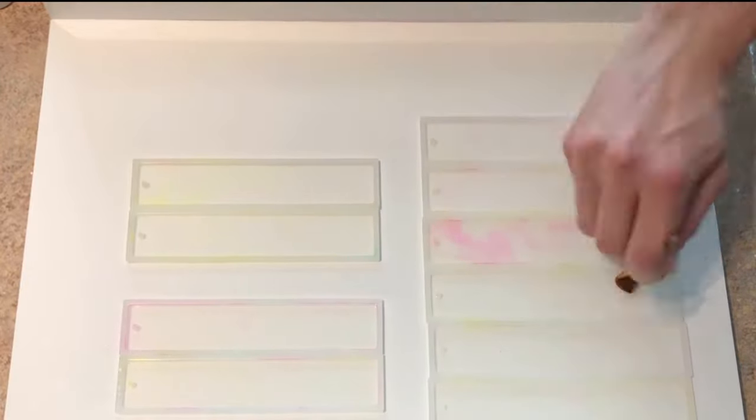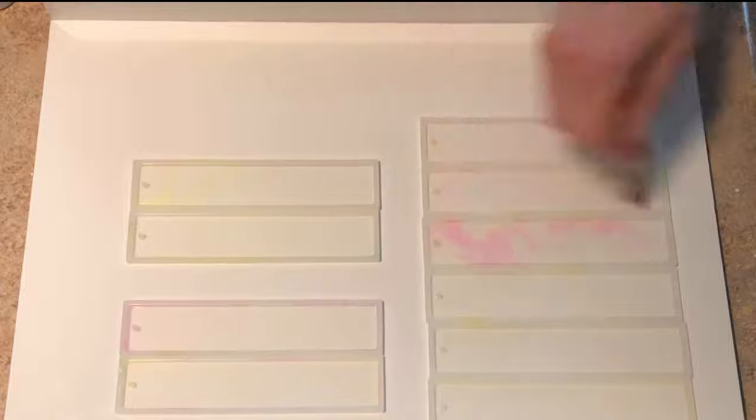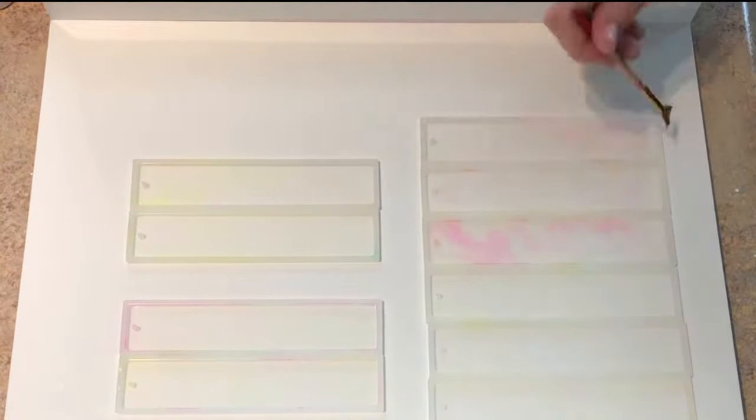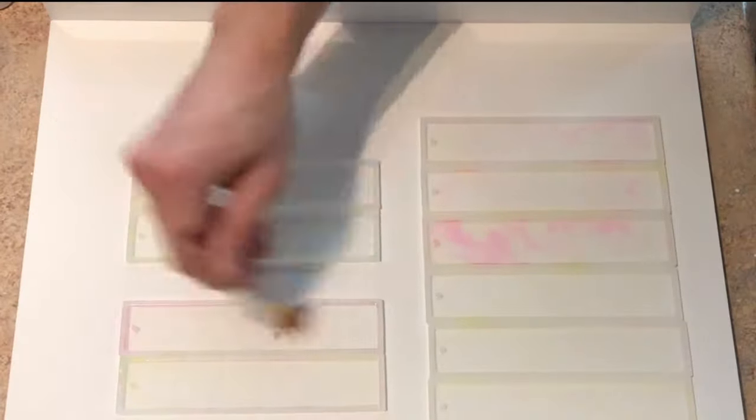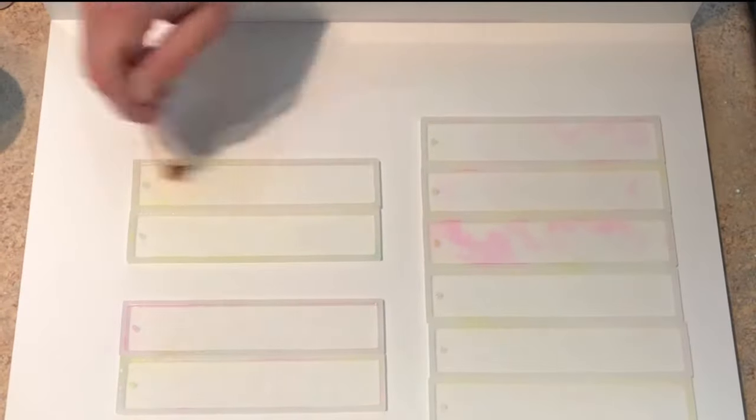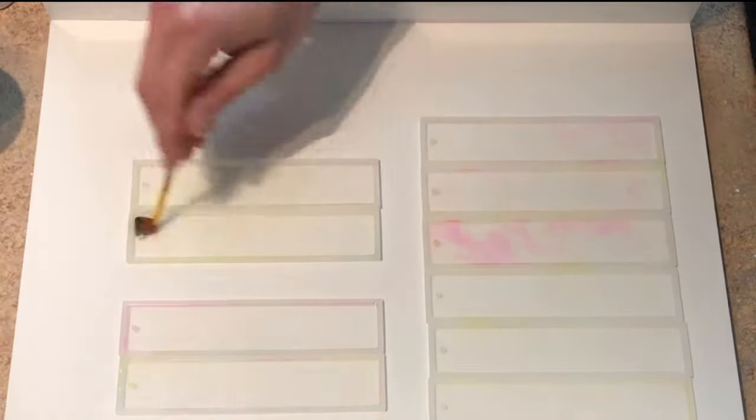Another thing worth mentioning about mold release spray is that you should let it sit for at least five minutes after you've applied it. It helps the grease and oiliness of the mold release to dry up a little bit. It still will allow your epoxy piece to pop out of the mold but it's not going to leave as much of a filmy residue on top of your piece and that's a really important part.